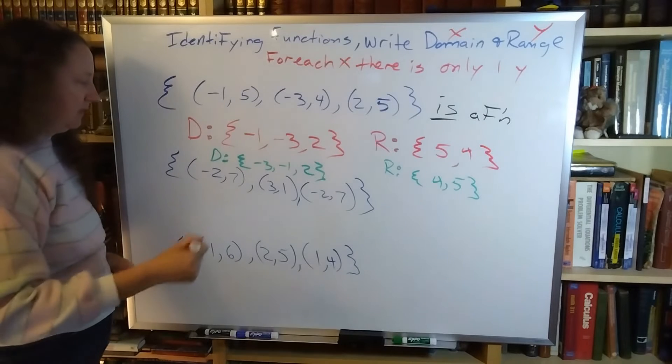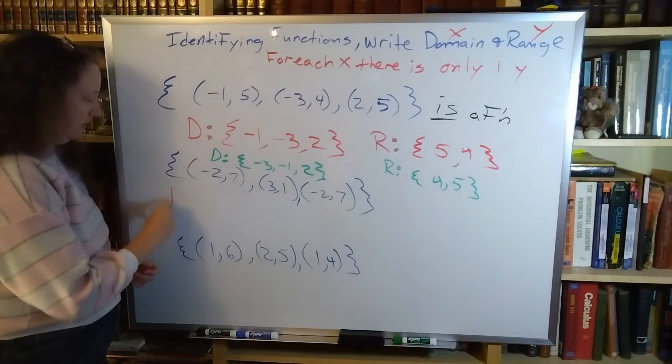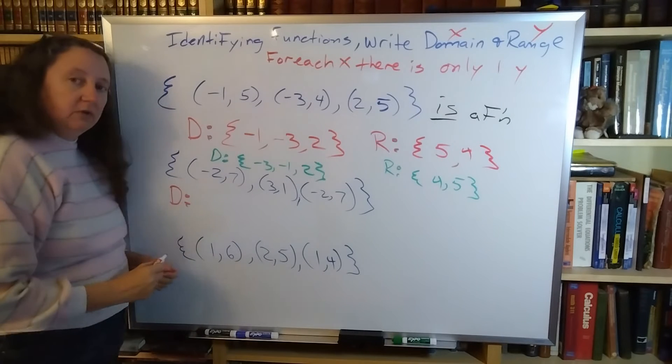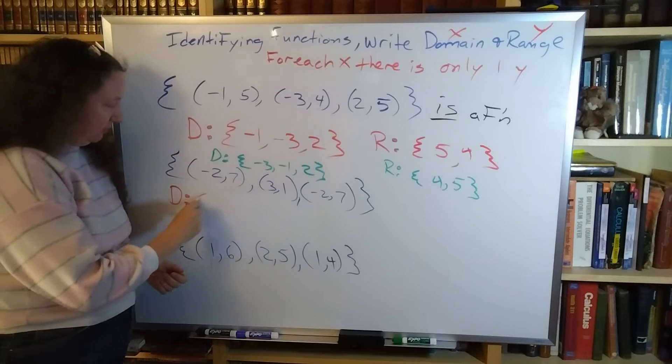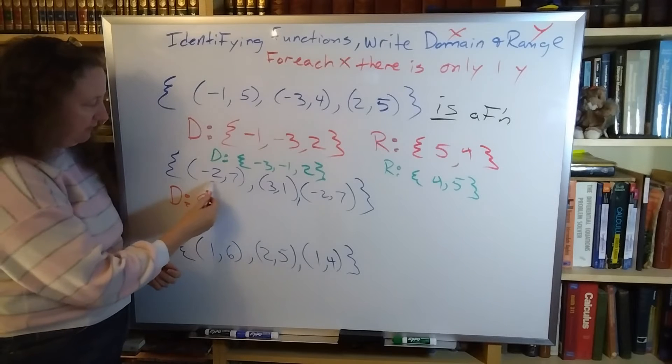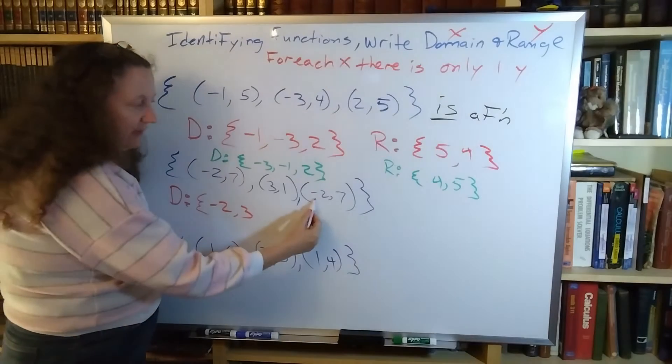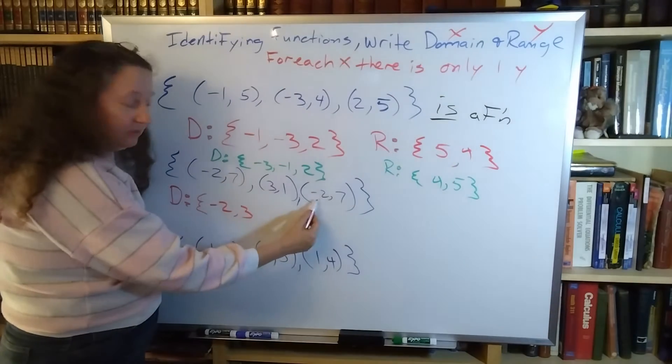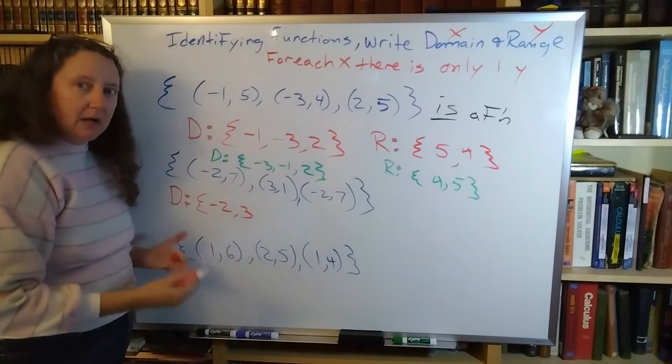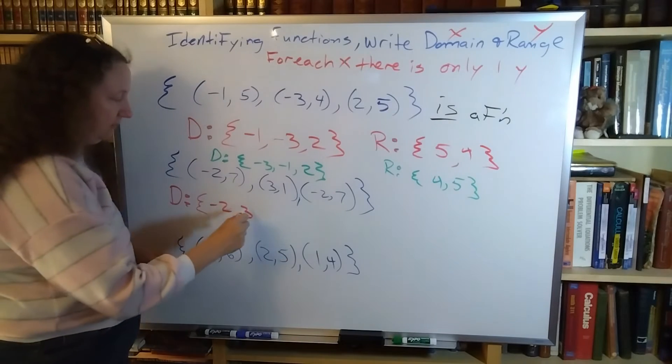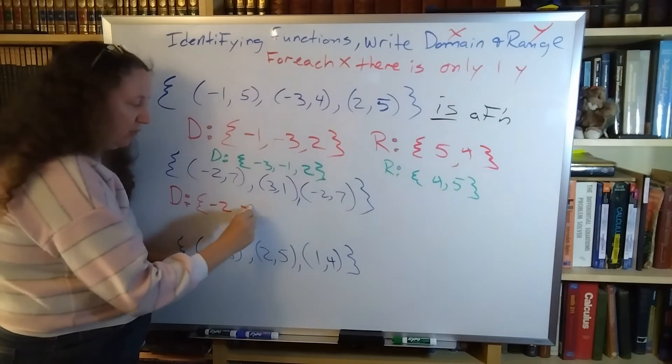Looking down here, my domain is going to be my x values. My x value is negative 2, x value is positive 3, x value is negative 2 - it repeats. It may or may not be okay, we're going to figure that out. But because it repeats I don't need to write it.